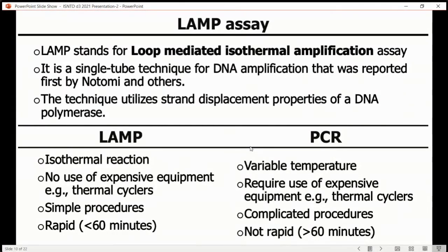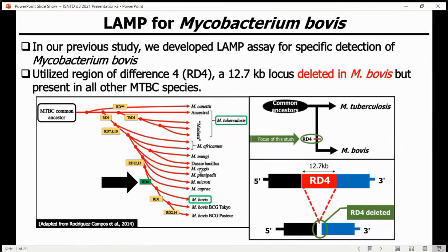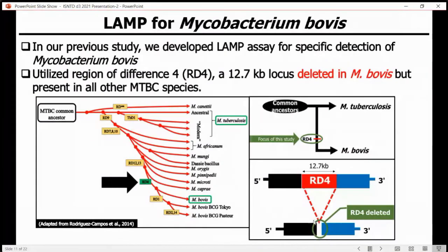So looking at these advantages, we thought LAMP would be a better approach to detect Mycobacterium bovis. In our previous study, we developed a LAMP assay for specific detection of Mycobacterium bovis. We utilized the genomic difference at the Rd4, a 4.7 kb locus that is deleted in Mycobacterium bovis but present in other Mycobacterium tuberculosis complex species. The history of these species is that they are 99.9% similar but have evolved from a common ancestor through deletion of certain sequences, and one of them is Rd4, which is deleted entirely in Mycobacterium bovis and present in other species of the MTBC. So we developed primers around that region that flank the deletion boundary of Rd4 in Mycobacterium bovis.